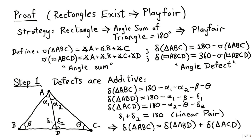Now we begin the second half of this logical equivalency. We will prove that under the assumption that a rectangle exists, Playfair's axiom is true. Our strategy for this proof is to show that given a rectangle, we can show that the angle sum of any triangle is equal to 180 degrees. This is Euclid's proposition 32, which we've also earlier shown to be logically equivalent to Playfair's axiom. So if we can prove this about the angle sum of triangles, we may conclude that Playfair's axiom is true.